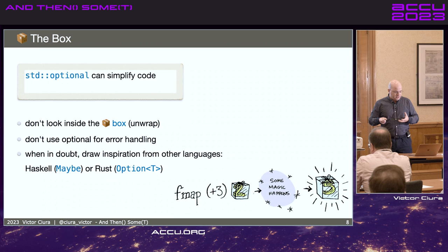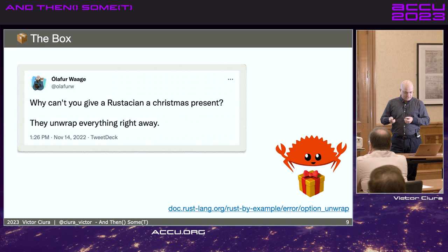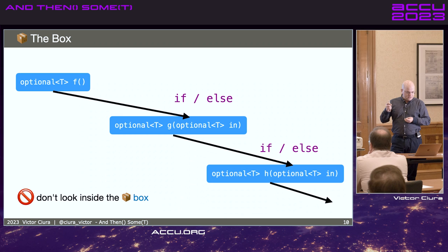I'm going to show examples, concrete examples. And I'm going to pick on optional and claim that standard optional can greatly simplify your code if you don't look inside the box, you don't try to unwrap it, and if you're not trying to use optional for error handling like I've seen folks do. And in general, when in doubt, look for inspiration from other languages where we borrow these concepts from, like Haskell and Rust. And I'm going to show comparative examples. But maybe not do what Haskellers do all the time.